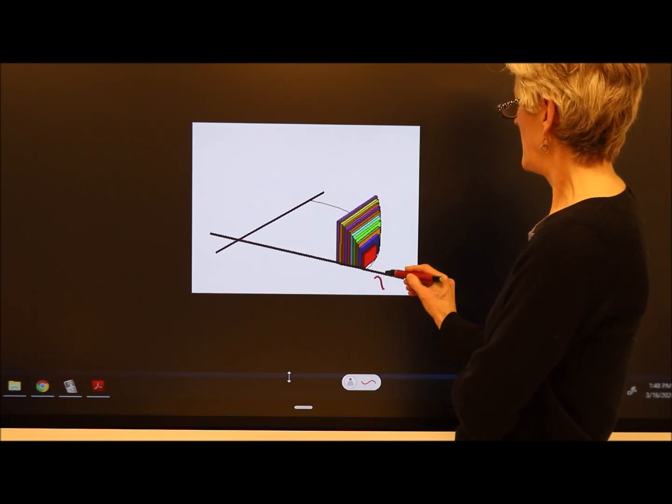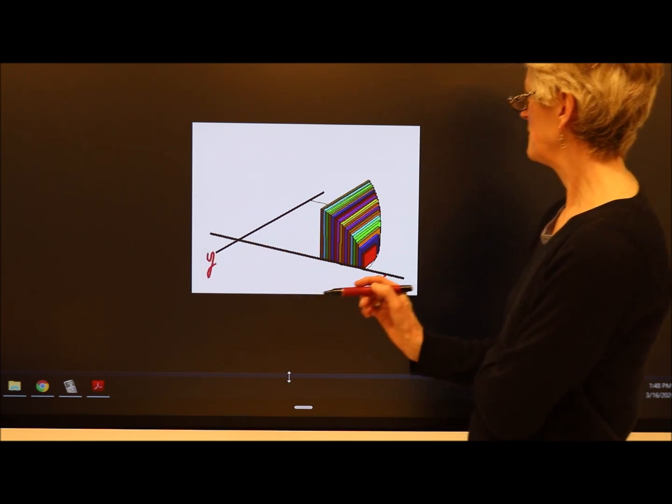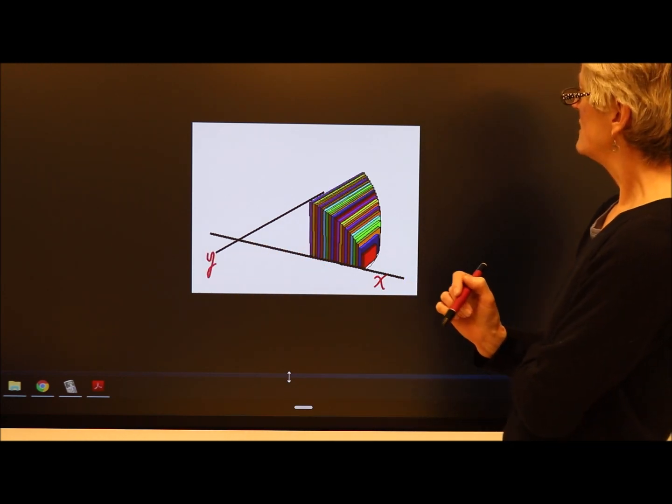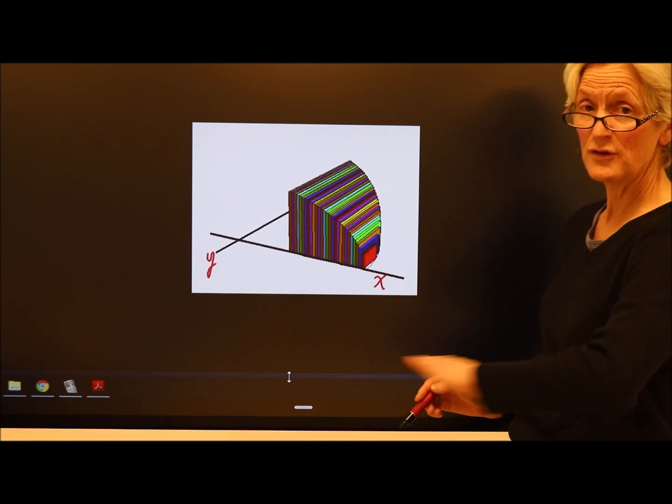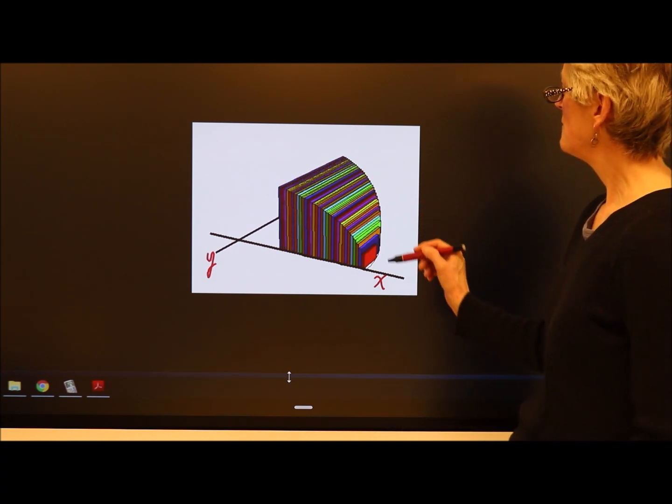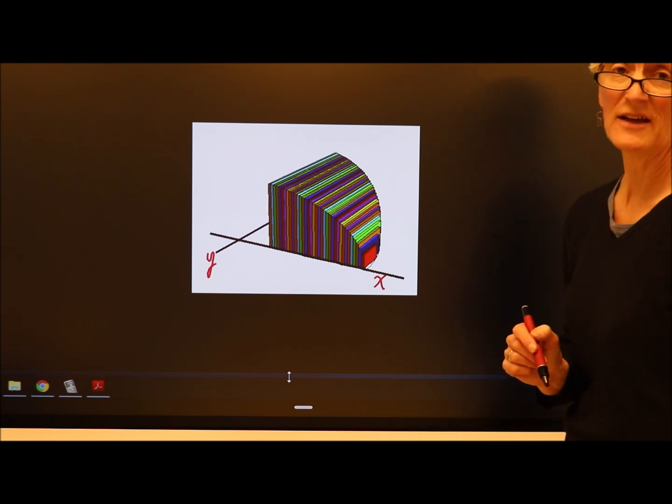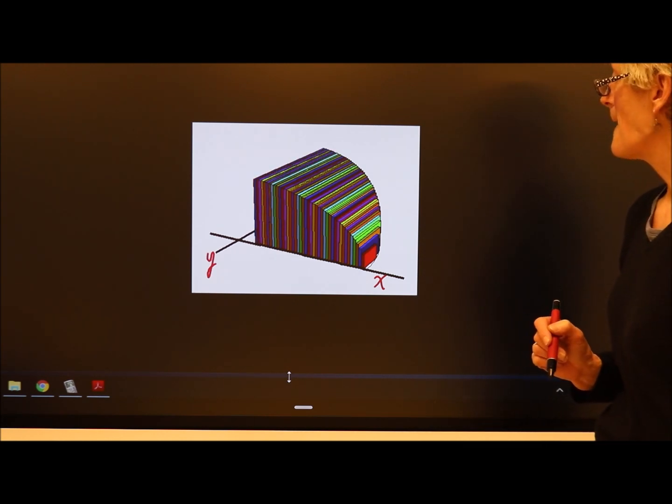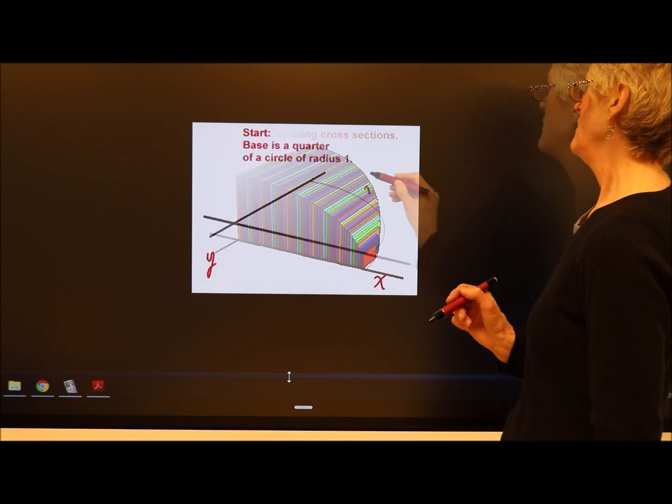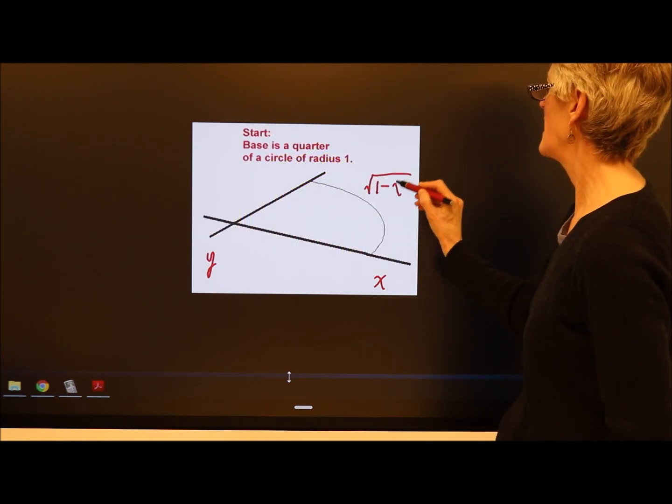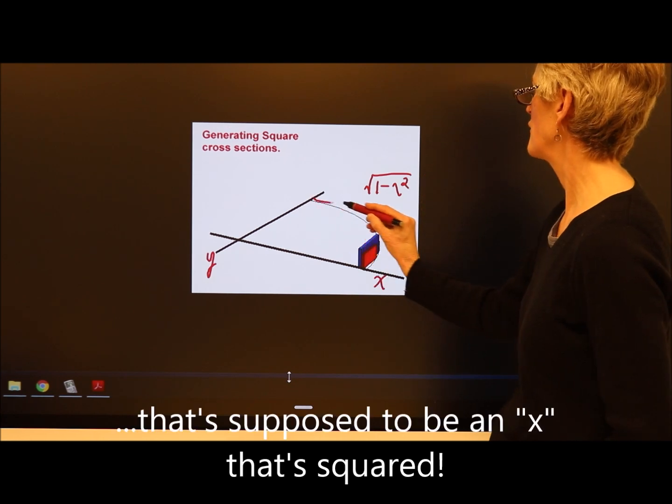Keep in mind this is the x-axis, this is the y-axis. And the curve that I'm starting with on the two-dimensional piece of paper is the curve f of x equals the square root of 1 minus x squared. So this is 1 minus x squared, this curve right here.